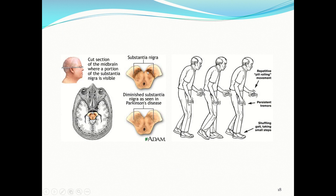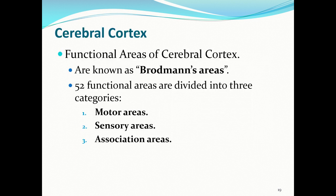A slice of the midbrain shows the substantia nigra near the posterior of the midbrain. It contains melanin — the pigment also found in skin — which serves as a precursor for dopamine. Dopamine then helps modulate the movement of the basal nuclei, which augment skeletal movement.